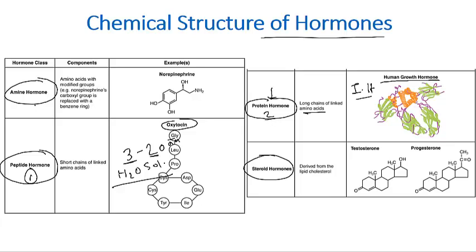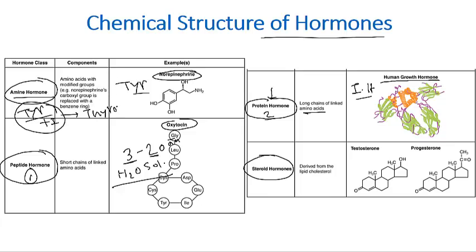The second type is amine hormones. These contain an amino acid, and in most cases that amino acid is tyrosine. For example, the catecholamines — epinephrine, norepinephrine, and dopamine — are all water soluble. Thyroid hormone is another example of an amine-type hormone, but thyroid hormone is lipid soluble. It is created when iodine is added to tyrosine residues, converting tyrosine into thyroid hormone.